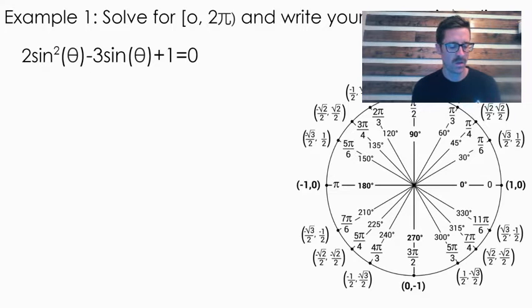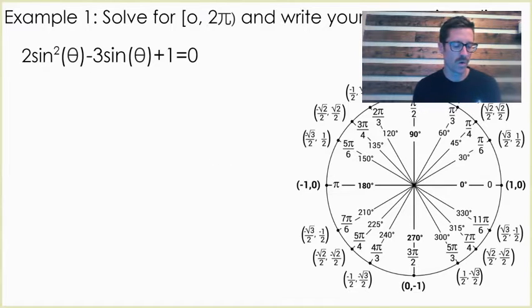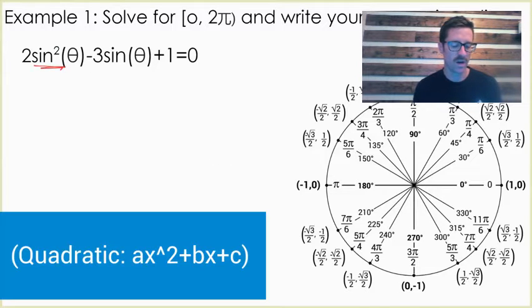Whenever we start off looking at something like this, this is very similar to the structure of a quadratic. We have something squared and then that same value right there. And so what I do is I like to do a u-substitution because it helps me see the whole thing better.